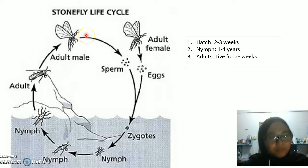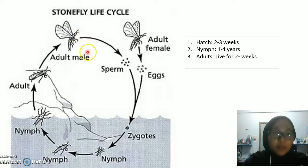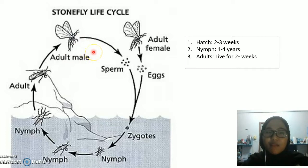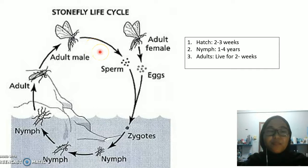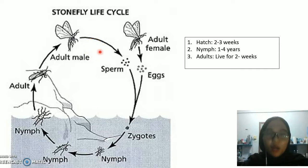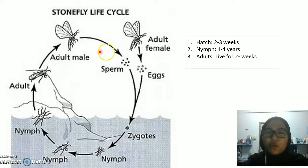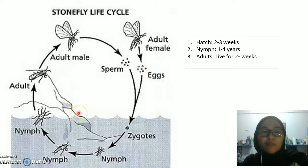Depending on the species, those that live only a short time never eat. Instead, they are focused on feeding on tree barks and growth on tree barks during the stonefly mating period.